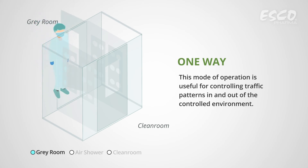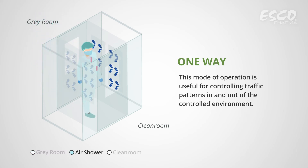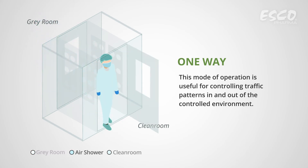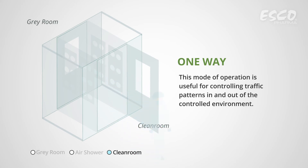One-way: Personnel may enter the controlled environment but not exit through the air shower. This is useful for controlling traffic patterns in and out of the controlled environment.